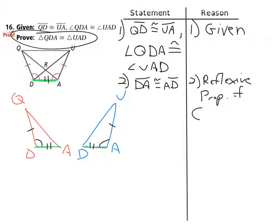property of congruence. Reflexive property of congruence. Okay, now we know the triangles are congruent to each other. I'll leave them here even though it crowds my statement a little bit, which is to then state that now we know triangle QDA